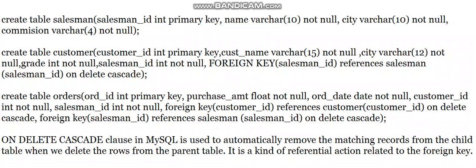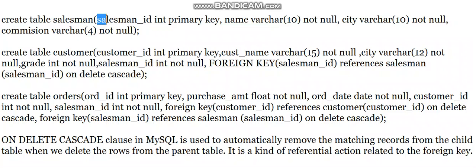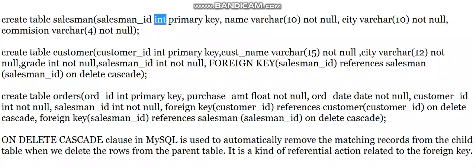In this video we are going to see the CREATE statements for three tables: salesman, customer, and orders. First we will create the salesman table. It has four attributes: salesman_ID, which is a primary key of type INT, and name, which is VARCHAR(10).